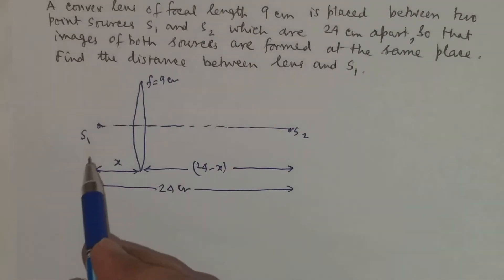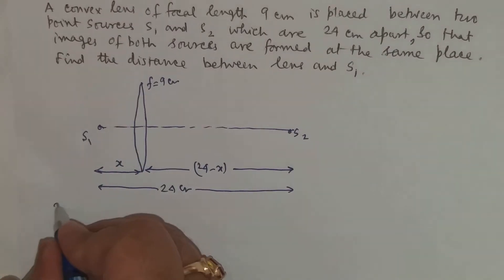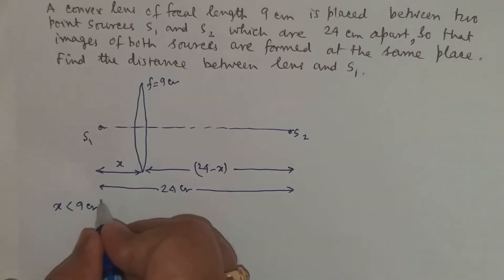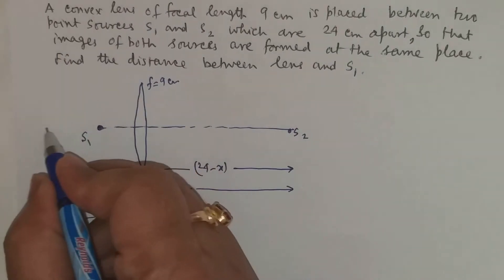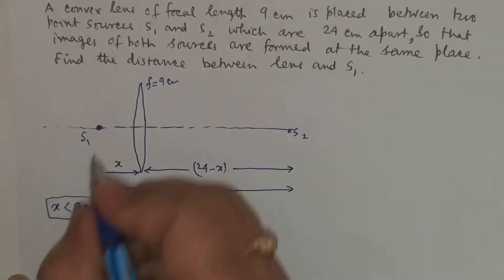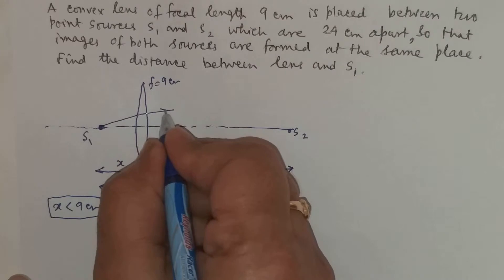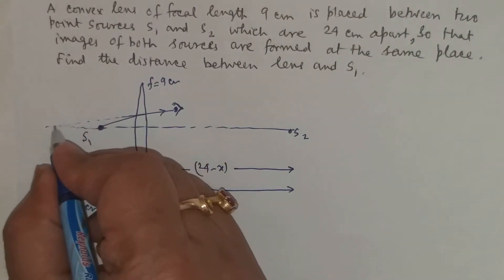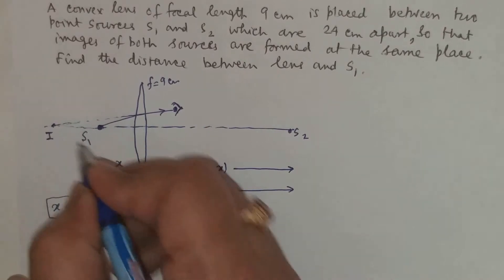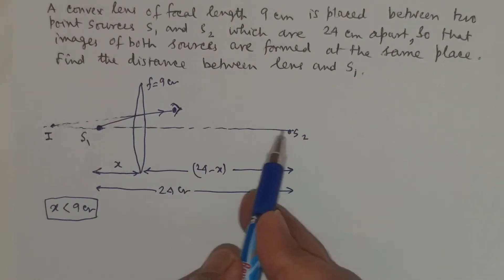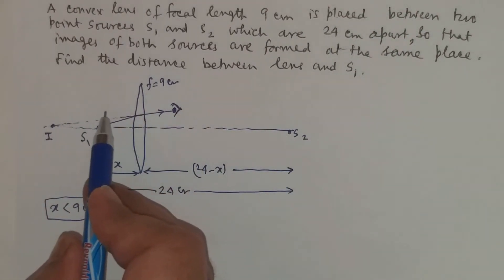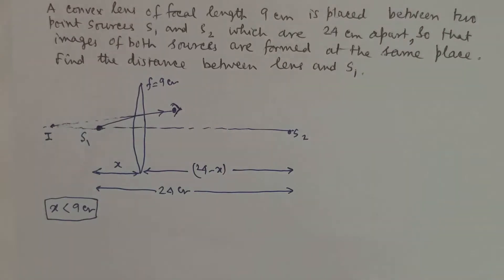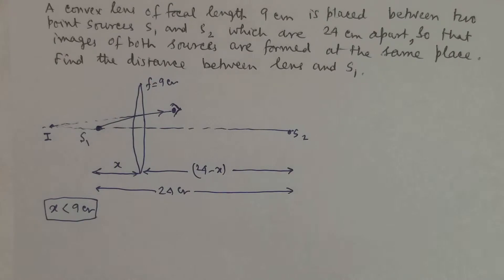Now if we can arrange in such a way that x is less than the focal length, that is x is less than 9 cm, then what will happen is that the image of S1 will be formed at the same place. If somebody is seeing from this side, the person will feel that this will be the image, and the image of S2 will also after refraction through the lens be formed at I. So that there is a common image of S1 and S2 both formed at the same position.